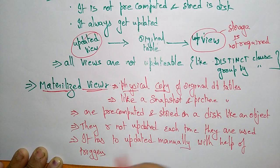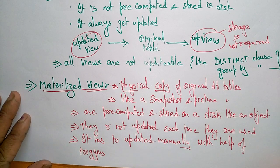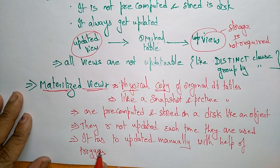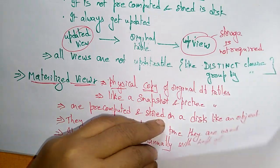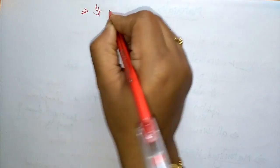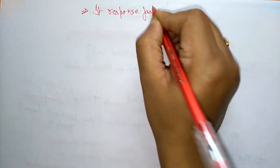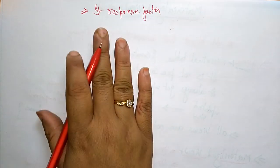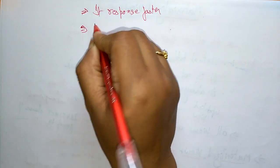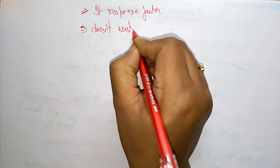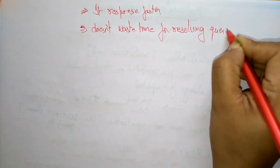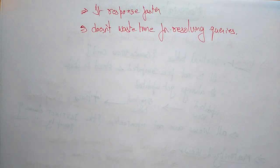Materialized views have to be updated manually with the help of triggers. In the query, you have to specify the update. Materialized views respond faster when compared to views and do not waste any time in resolving the queries. These are the points to remember for the materialized view.